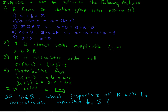The assumption that S is arbitrary is very important here. We want this to work for every subset. To answer this question, we can go through each one of these properties and examine if it really is inherited by any arbitrary subset. So let's go ahead and do that.